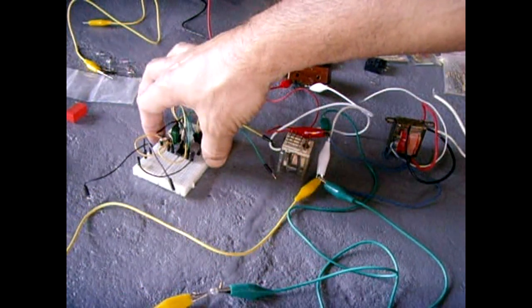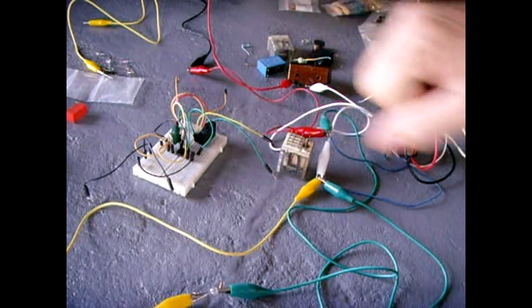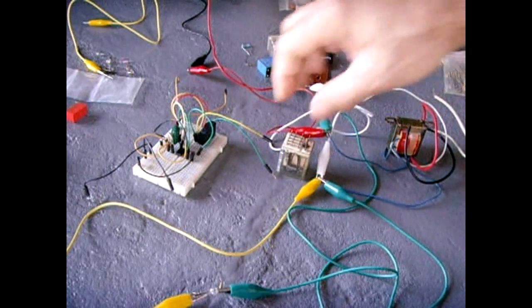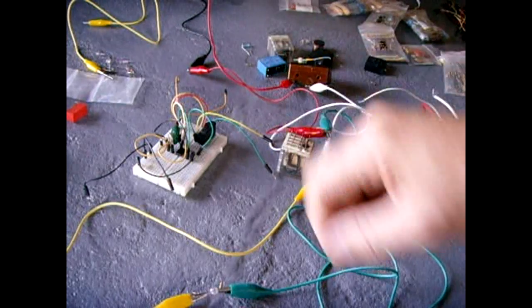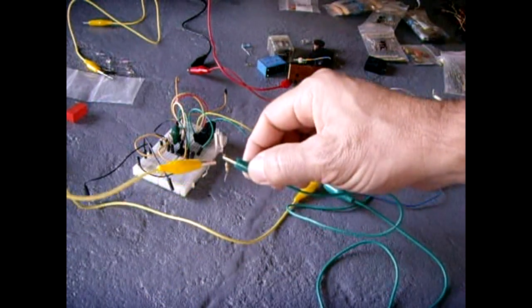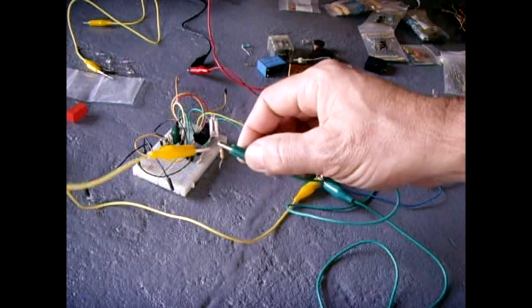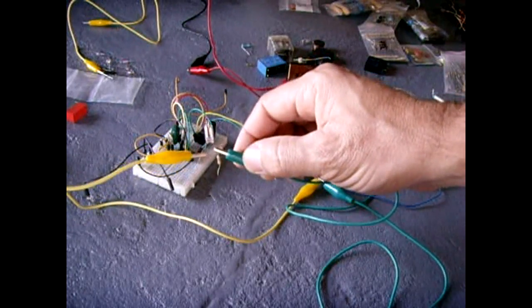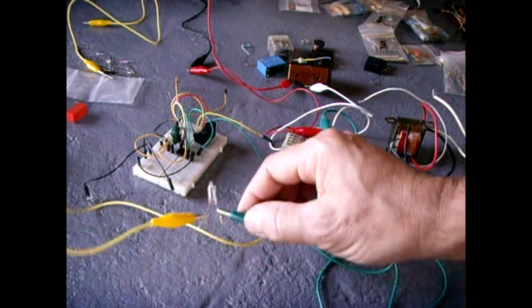What I did here is I took a 555, a stable. I set it for around 28 hertz. And that is going to drive this relay coil. And as it's driving this coil, you'll see the back EMF-generator will keep this neon lamp nicely illuminated. So let me put that together.